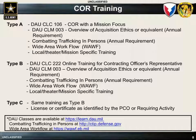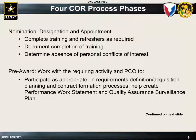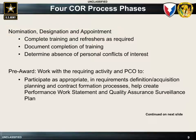The online training can be found at the sites listed on the slide. There are four general phases to the COR process. The first is the Nomination, Designation, and Appointment phase. This is the phase where the COR will complete any required training, document the completion of that training in the COURT tool, and assure that there are no conflicts of interest.